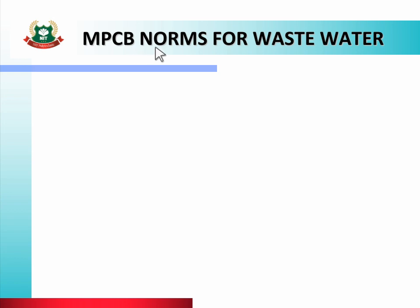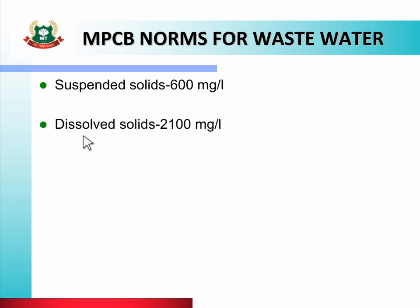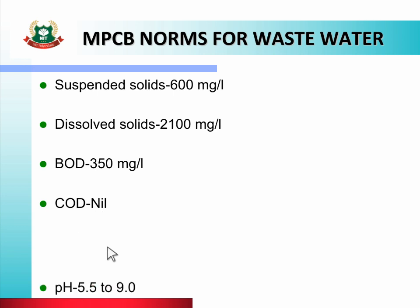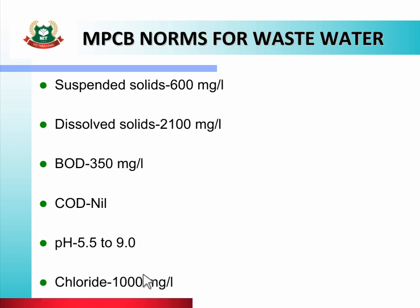Waste water treatment ke baad, usme jo materials rehte hain, woh kitni matra mein rehte hain taaki woh waste water safe rahe. Isme aata hai: Suspended Solids 600 mg/L, Dissolved Solids 2100 mg/L, BOD 350 mg/L, COD 250 mg/L, pH 5.5–9, Chloride 1000 mg/L.